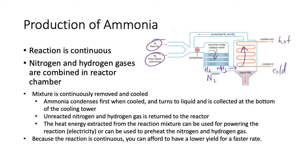Why does ammonia condense first? It would be worth remembering melting and boiling points and explaining why ammonia has a higher boiling point than nitrogen and hydrogen gas — again linking to old topics. The unreacted nitrogen and hydrogen go back to the reaction chamber, and the liquid NH3 is collected at the bottom.